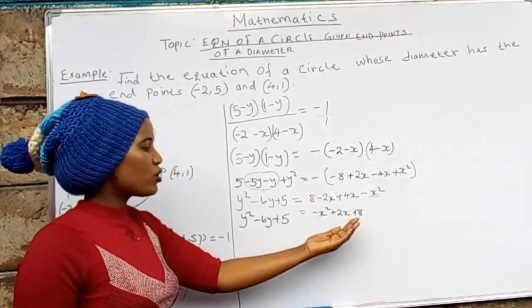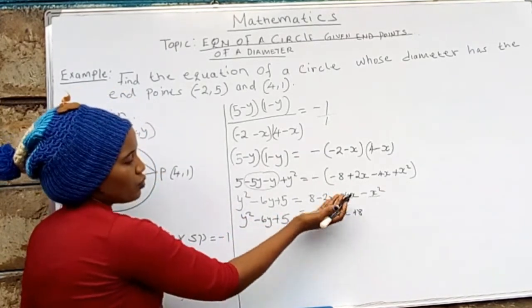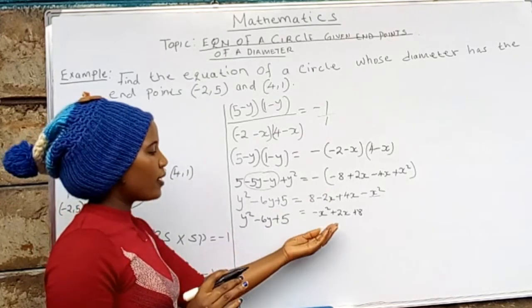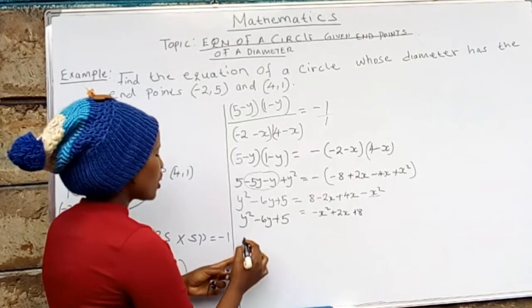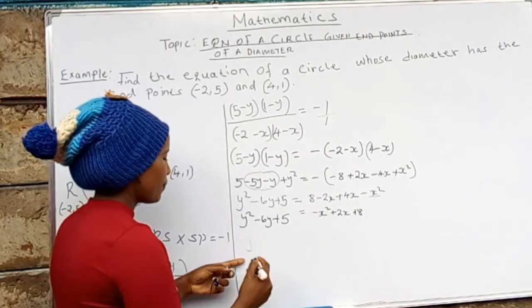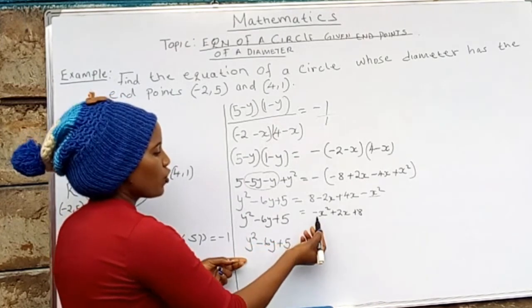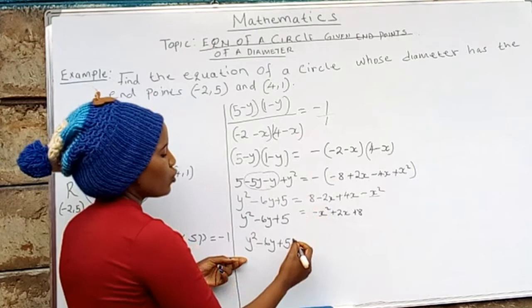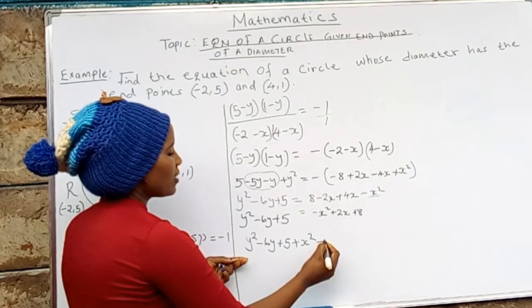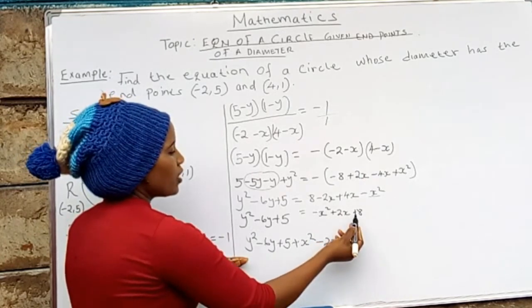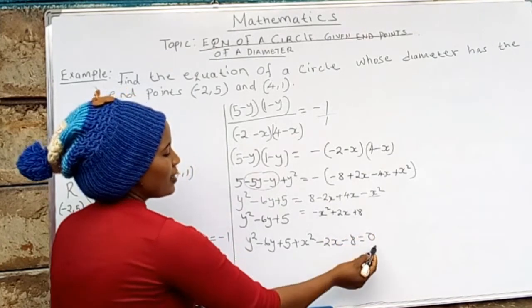So guys, at this point, we want to take everything on one side of the equation. So we are bringing this side of the equation to the other side. And remember, when you are carrying terms from one side of the equation, be careful with the signs. So we shall have y² - 6y + 5. This one is -x², it will be +x². This one is +2x, it shall be -2x. This one is +8, it shall be -8. It equals 0.